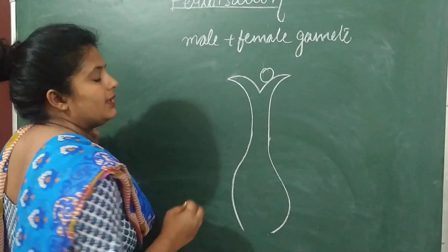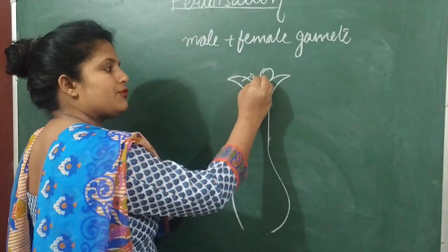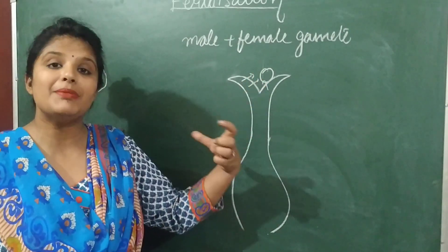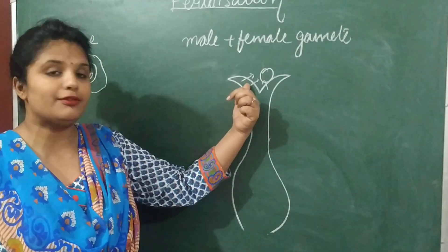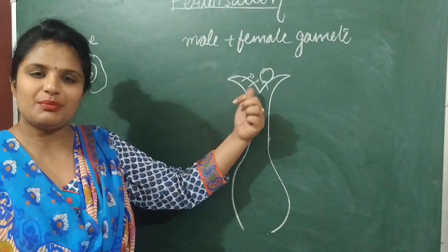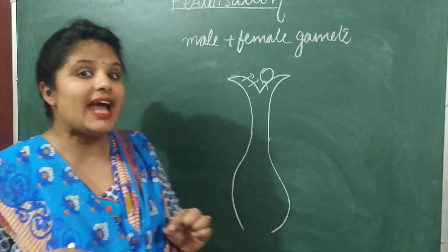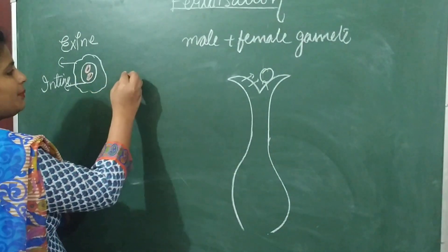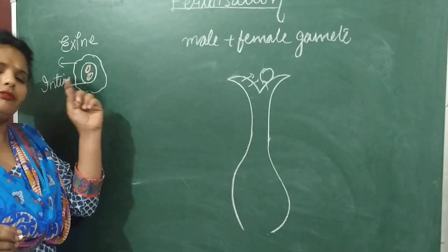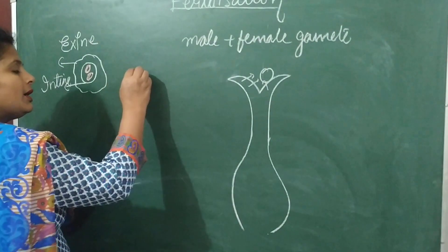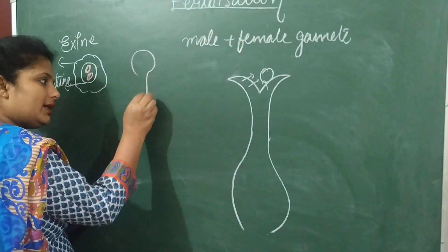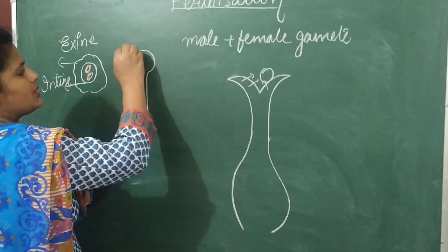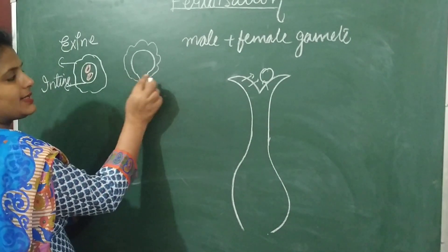When this pollen grain falls on the stigma of the ovary, it starts to absorb food from the stigma. The pollen grain becomes mature because it is getting food and nutrients from the stigma, and then it develops a pollen tube. The pollen tube develops from the intine — the intine elongates and develops into a tube, and passes out by bursting through the wall of the exine.